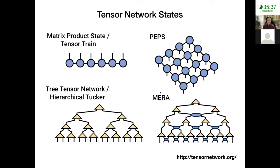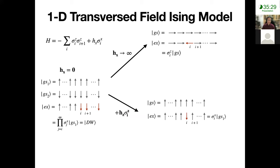I want to slightly deviate from the 1D Ising model by applying a transverse field. This is the 1D Ising model with a transverse field. We know that when the transverse field is zero, we have two degenerate ground states — one is all spins up and the other is all spins down. To create an excitation, I just create a domain wall by applying a sigma_x operator from site i to the right boundary. This creates the lowest energy excitation in this system — we call this the domain wall state.